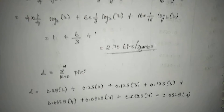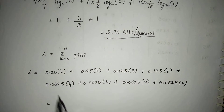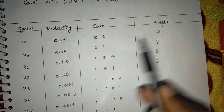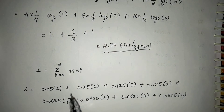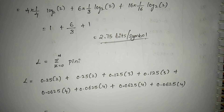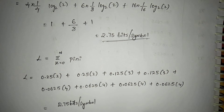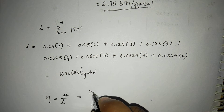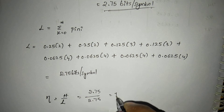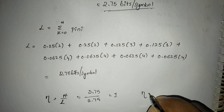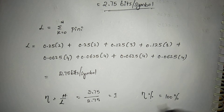After calculating entropy, we calculate average code length L. Code length is found by multiplying each symbol's probability by its code length: 0.25×2 + 0.25×2 + … + 0.0625×4. This gives L = 2.75 bits per symbol — the same value as entropy. Therefore efficiency η = H / L = 2.75 / 2.75 = 1, and as a percentage η = 100%.